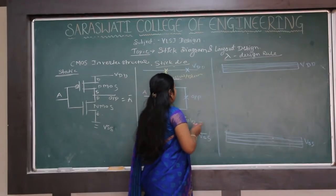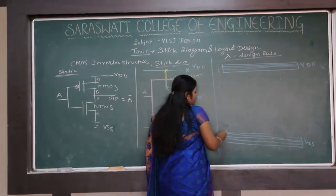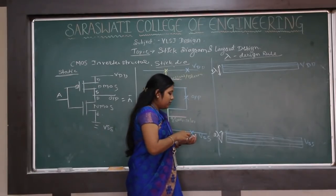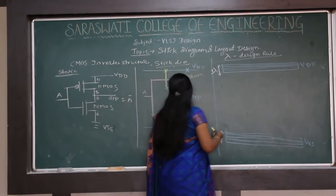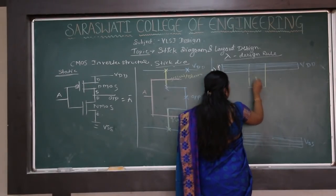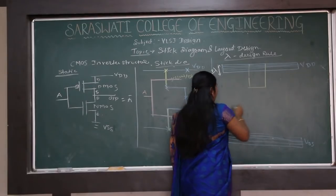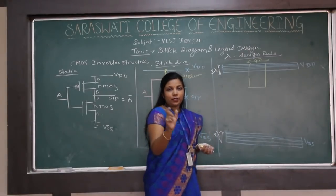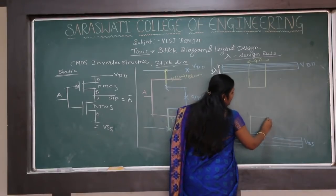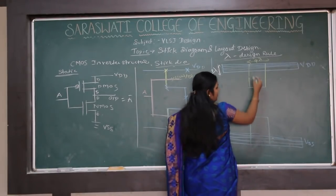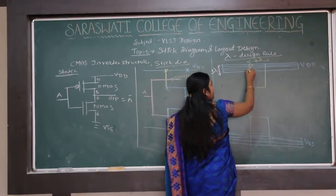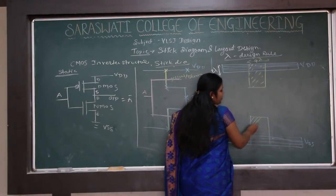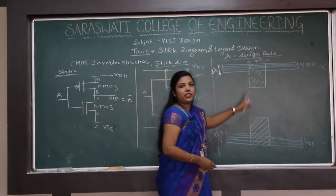For P diffusion and N diffusion, the width of the tracks should be greater than 3 lambda. The P diffusion area is drawn with a width of about 4 lambda, satisfying the greater-than-2-lambda rule. The N diffusion area is drawn again in green. P diffusion area is represented with one type of hatching pattern, and N diffusion area with solid slant lines.